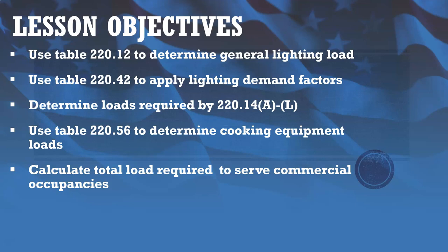As you'll notice by our first two objectives, several of the steps we're going to take to do a commercial calculation are going to be the same as we did with a dwelling calculation. We just have a couple of steps that are going to be slightly different, or that are going to be referencing different tables, such as Table 220.56 for cooking equipment.